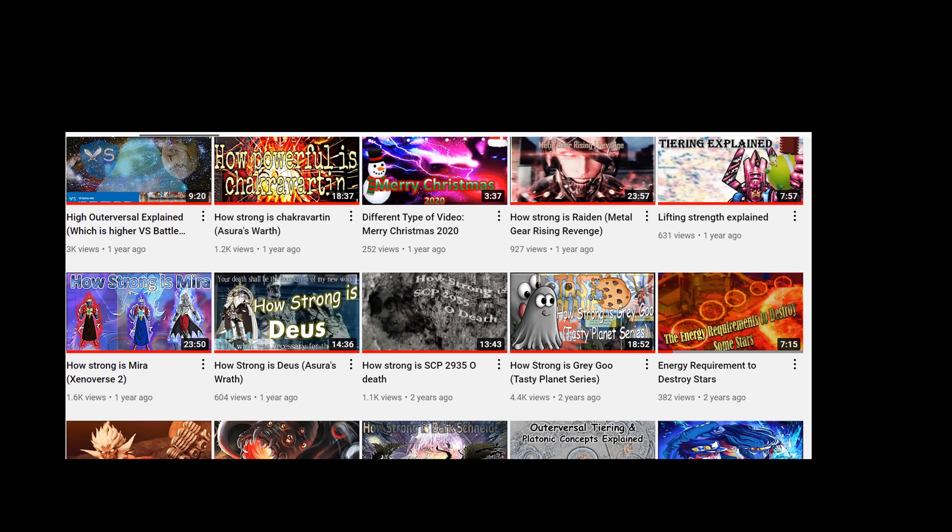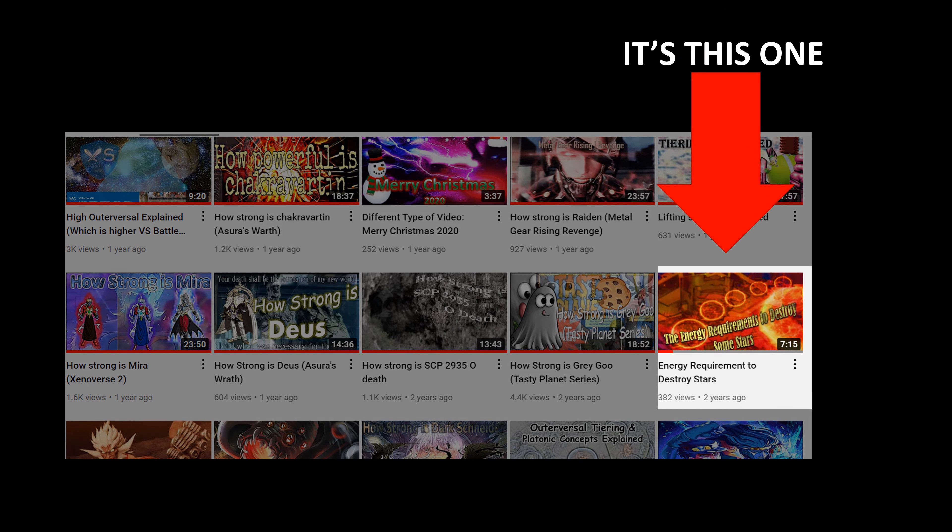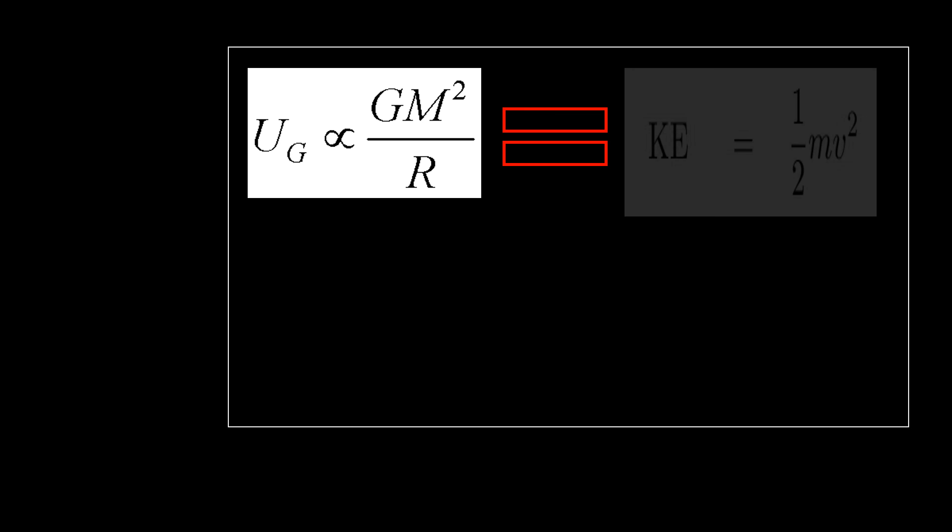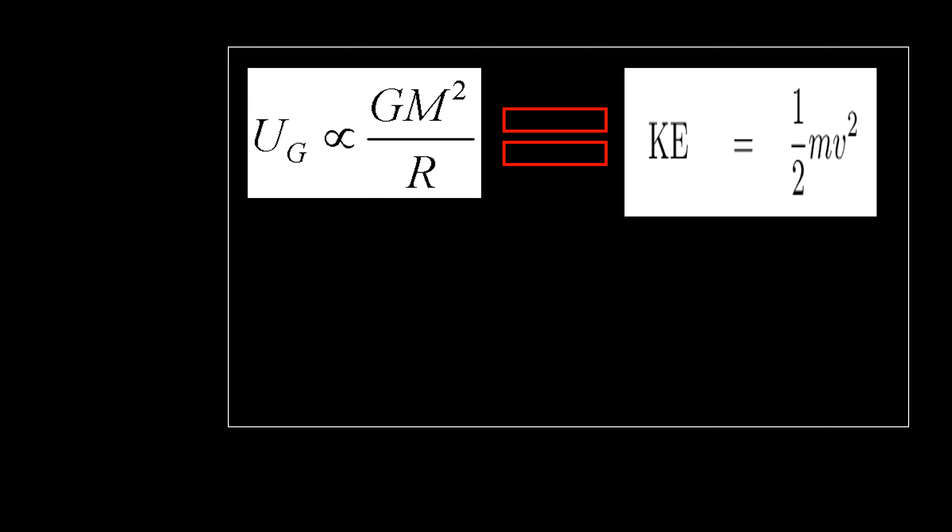In a previous video of mine you can find on my channel from about two years ago, you'll see me use this equation to find the energy requirement to destroy certain stars. Allow me to rip something straight from that previous video. If we use the gravitational binding energy formula that is normally shown, we can equate it to that of kinetic energy, as energy is never destroyed, just always converted.